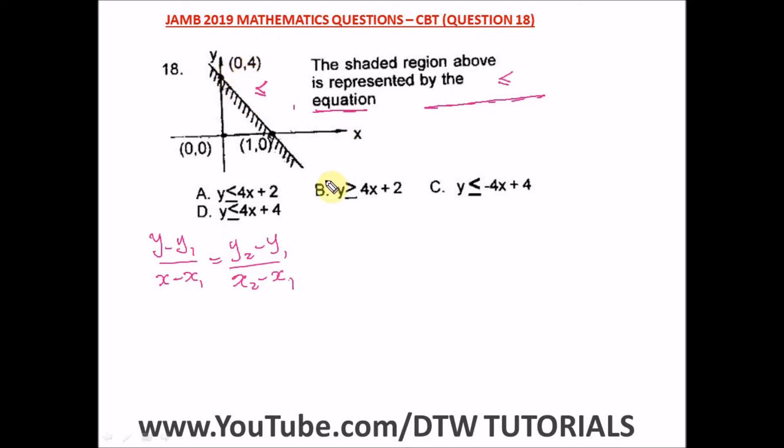From here, our first point is 0 comma 4. Our second point is 1 comma 0. This is x₁, y₁ and this is x₂, y₂. Let's put these values into this equation to get our equation of the line, which should be likened to y equals mx plus c.